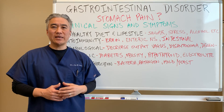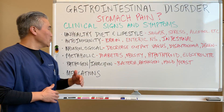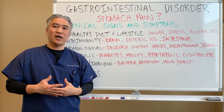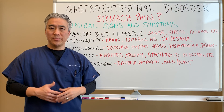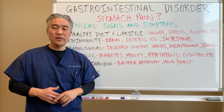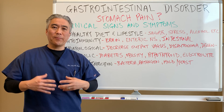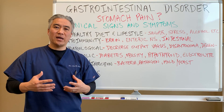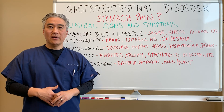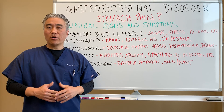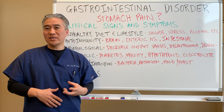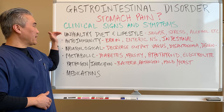It becomes more complicated when we go deeper into what's going on with the patient. We ask: does the patient have autoimmunity — an immune response to their own tissue? Some patients have hypothyroid, and the number one cause may be Hashimoto's thyroiditis. These inflammatory autoimmune processes can manifest as Crohn's disease, celiac disease, rheumatoid arthritis affecting the joints, or psoriasis affecting the skin.